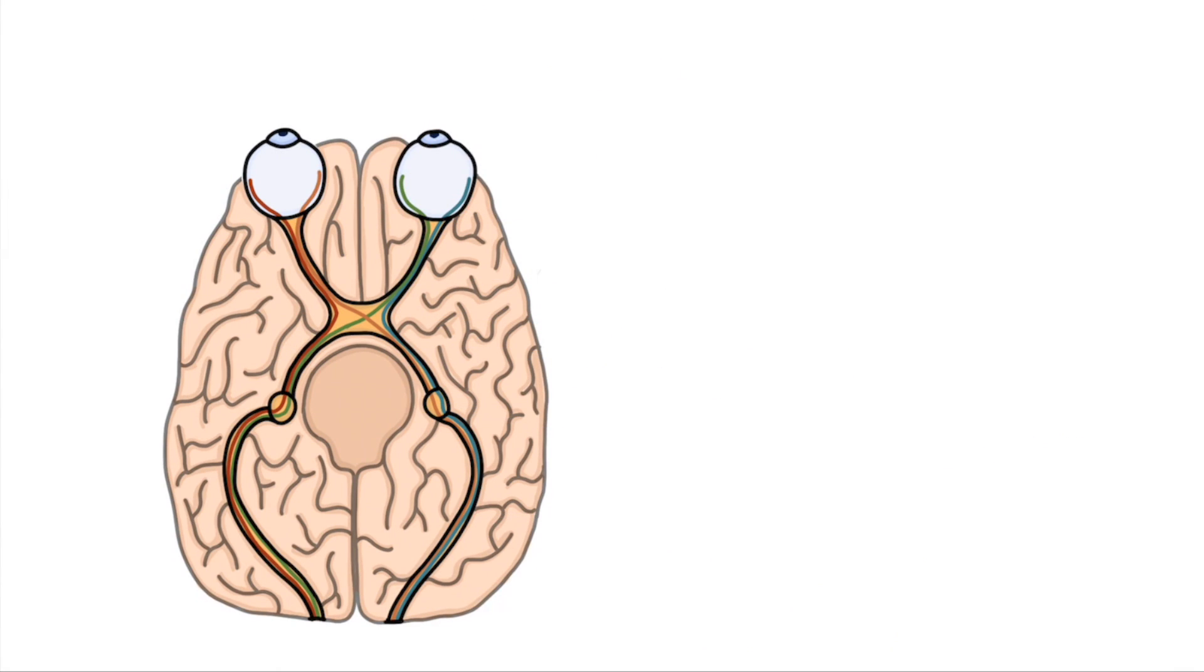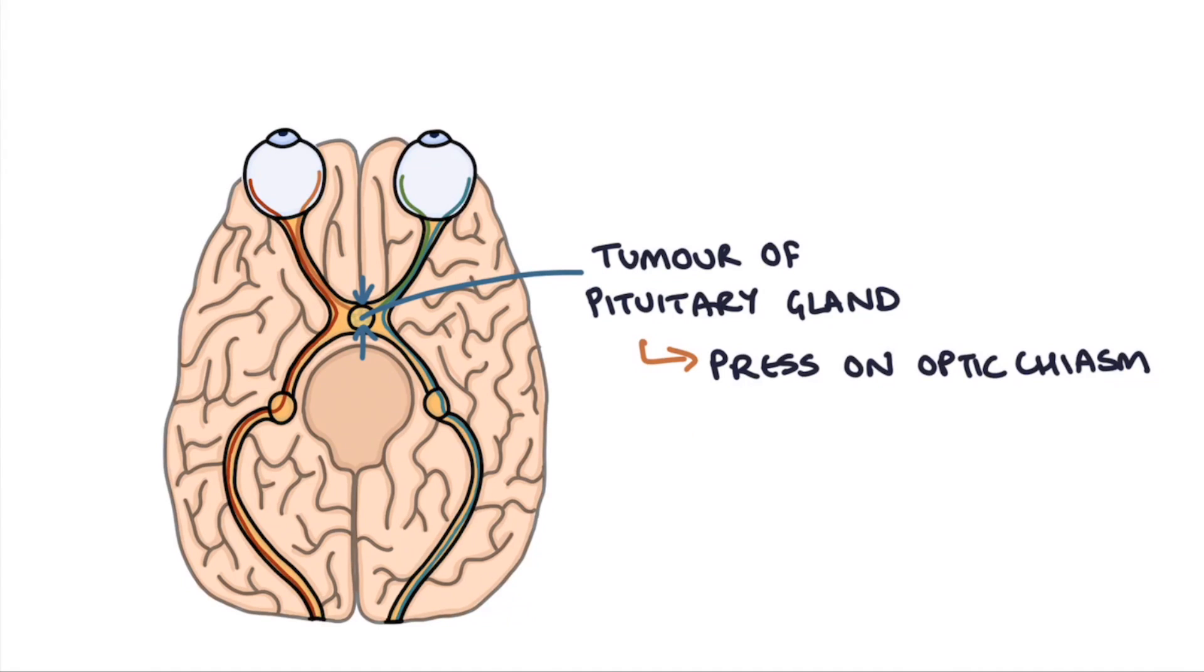The most common cause of a bitemporal hemianopia is a tumor of the pituitary gland, which sits just below the optic chiasm. When this tumor grows big enough in size to press on the middle of the optic chiasm, it compresses and disrupts the signals at that point.